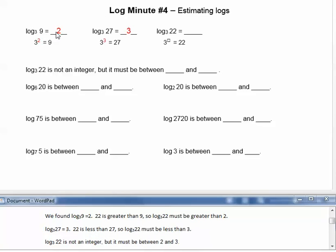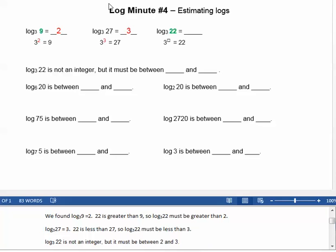Well, we found that log base 3 of 9 is 2, and 22 is greater than 9, so log base 3 of 22 must be greater than 2. Log base 3 of 27 equals 3, and 22 is less than 27, so log base 3 of 22 must be less than 3. Log base 3 of 22 is not an integer, but it must be between 2 and 3.